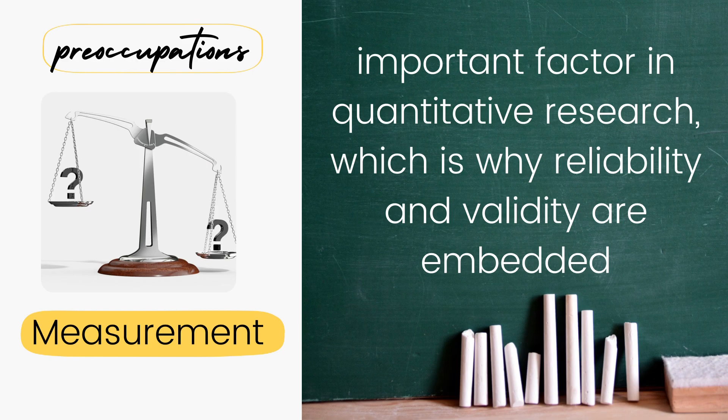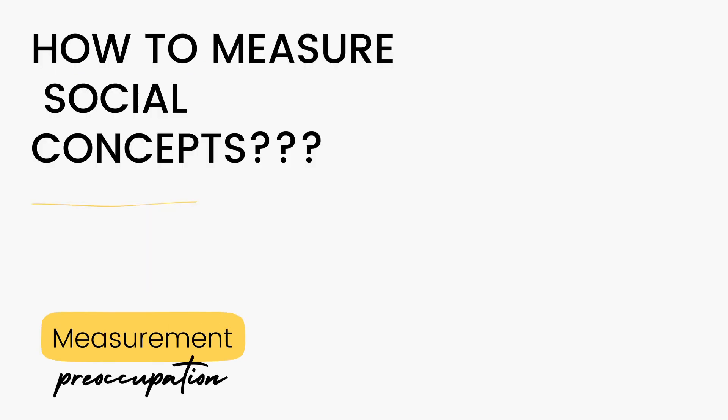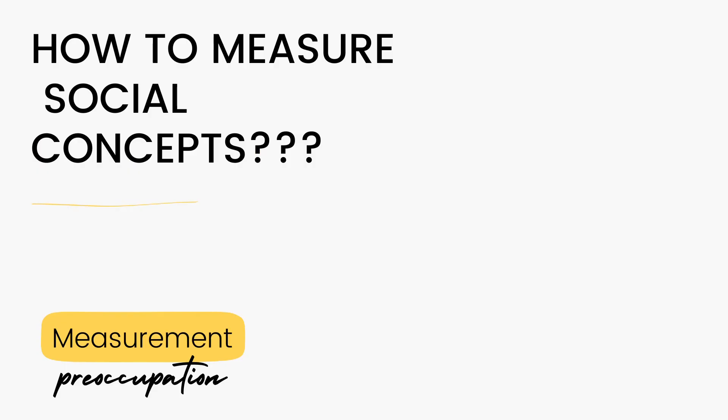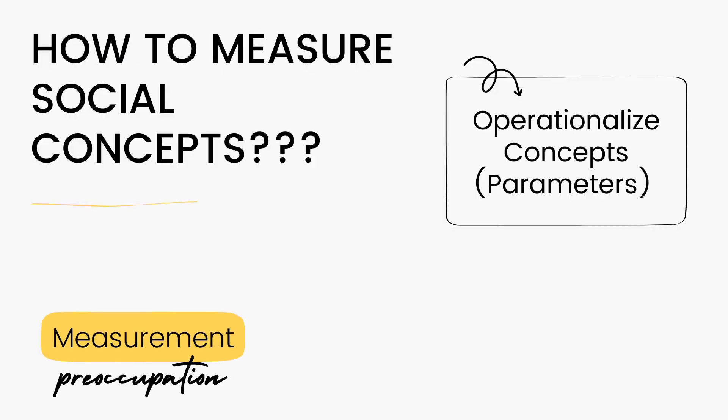However, how about those that aren't measured by numbers? How about if we measure social phenomena? For example, you want to know the sincerity of a suitor, or of your girlfriend, or of your spouse. How do you measure these things? How do we measure love, joy, happiness, satisfaction? In order to have a measurement for these social constructs or social phenomena, we need to operationalize these concepts.